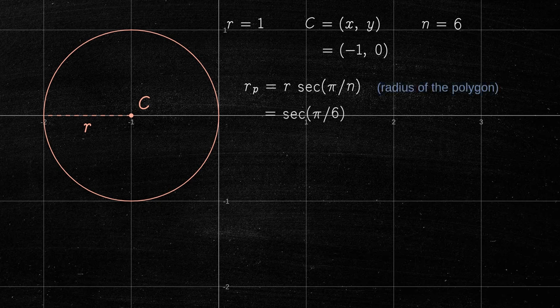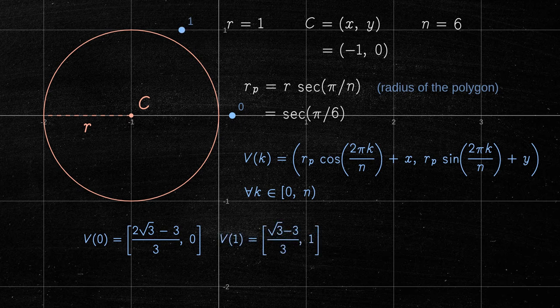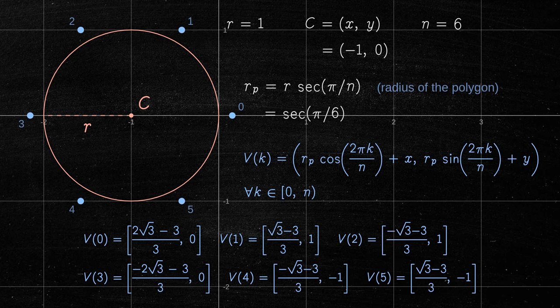We can now compute the coordinates of the hexagon's vertices using the function V we used earlier. Once we have all the vertices, we can use them to draw the hexagon.